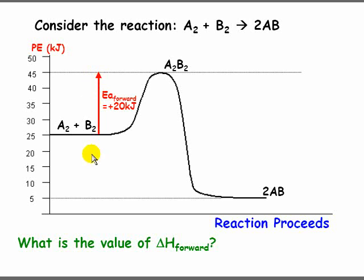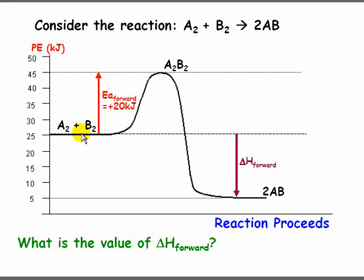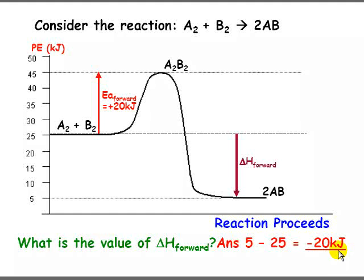For delta H forward, we're going from 25 in the reactants to 5 in the products. Notice that the enthalpy is going down, so it will be negative. We take 5 minus 25, which is negative 20. Another way to do this is: 25 minus 5 is 20, and because it's going down, it's negative. So delta H forward is negative 20 kilojoules.